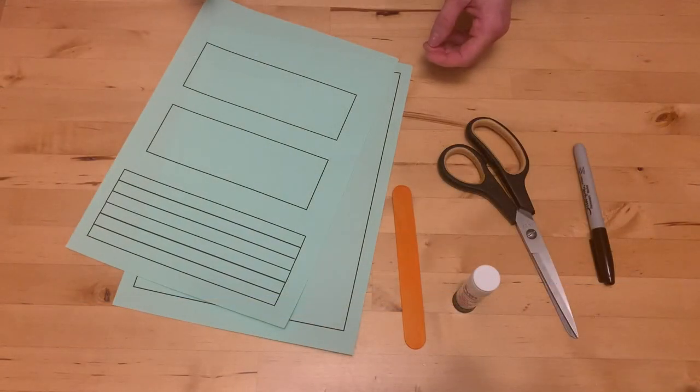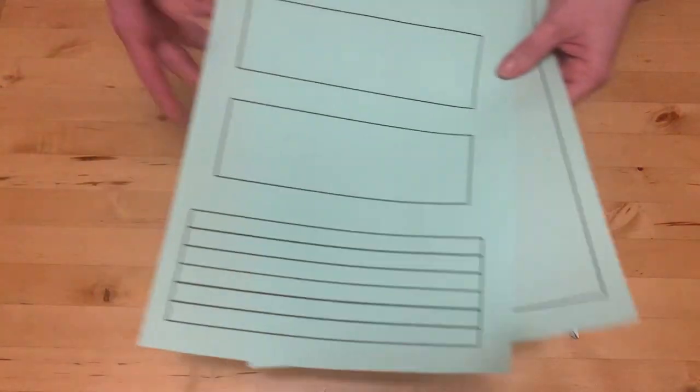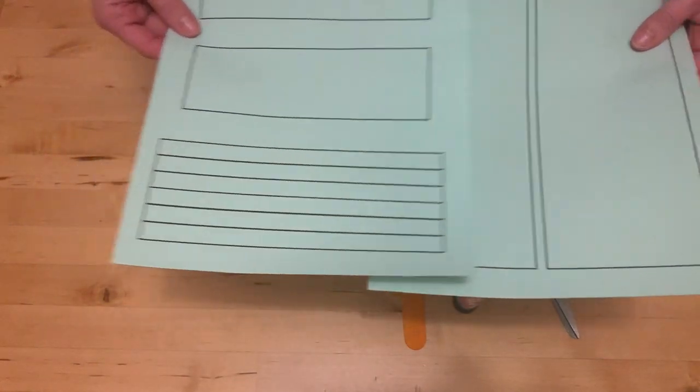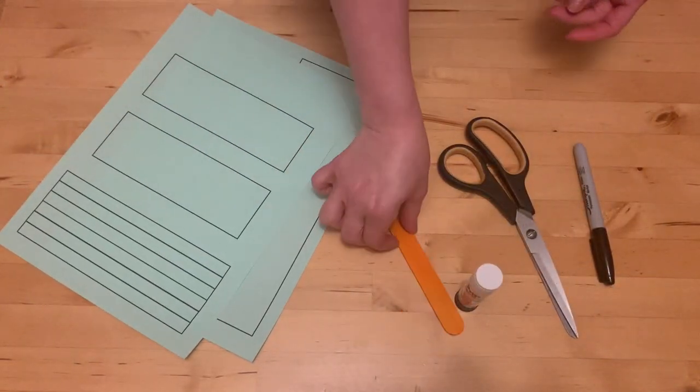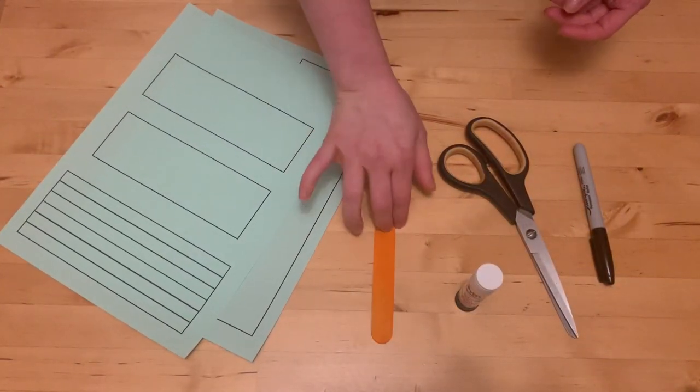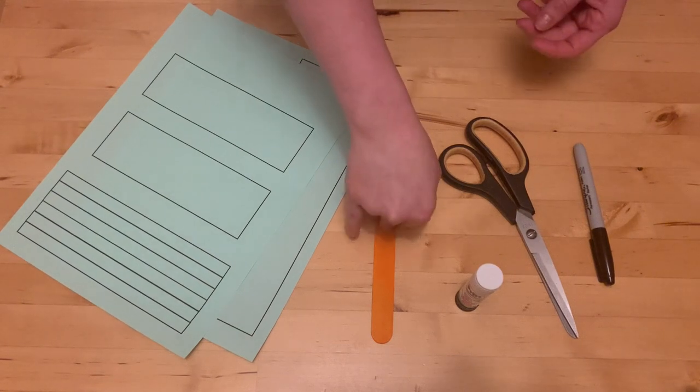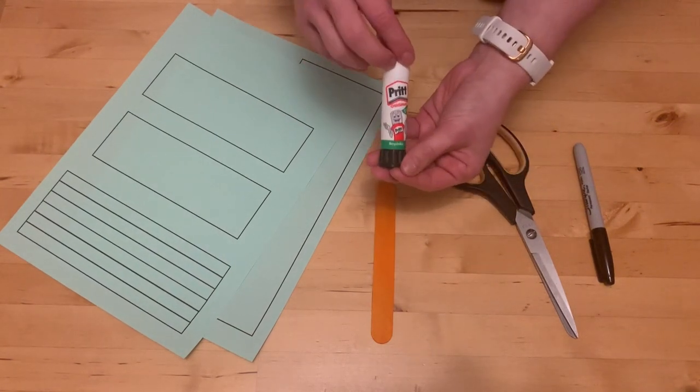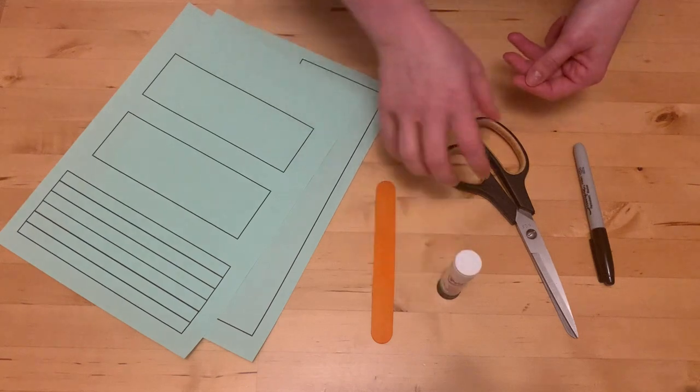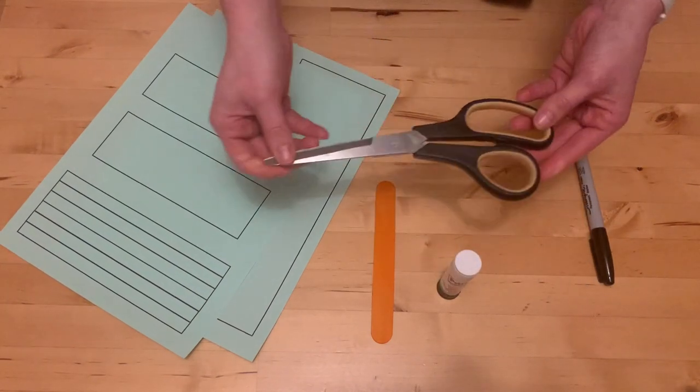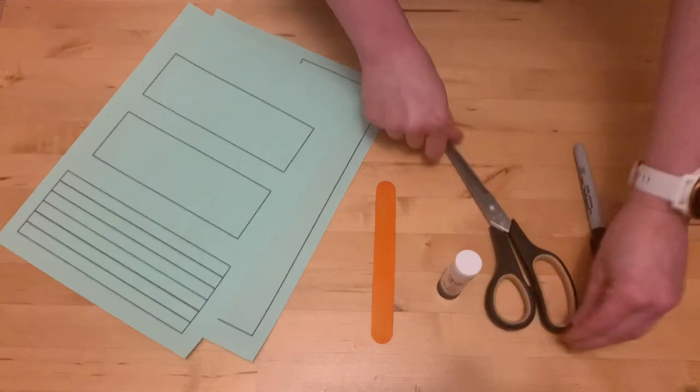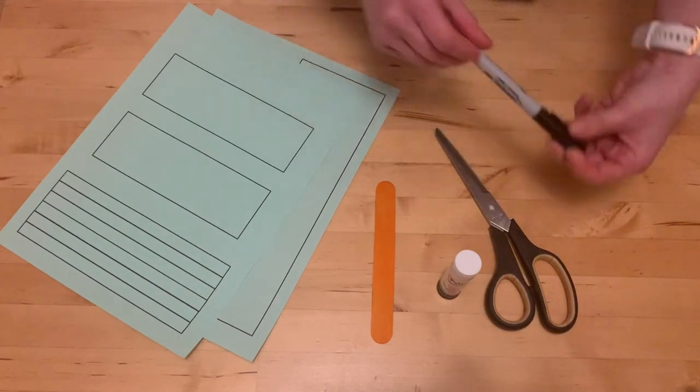What you need to make your walking ants is the template which is two pages, a lollipop stick, although it's not too important that you have one of those, a glue stick or sellotape or stapler. If you're using a stapler be careful and ask an adult for help, scissors and a pen for the eyes and mouth.